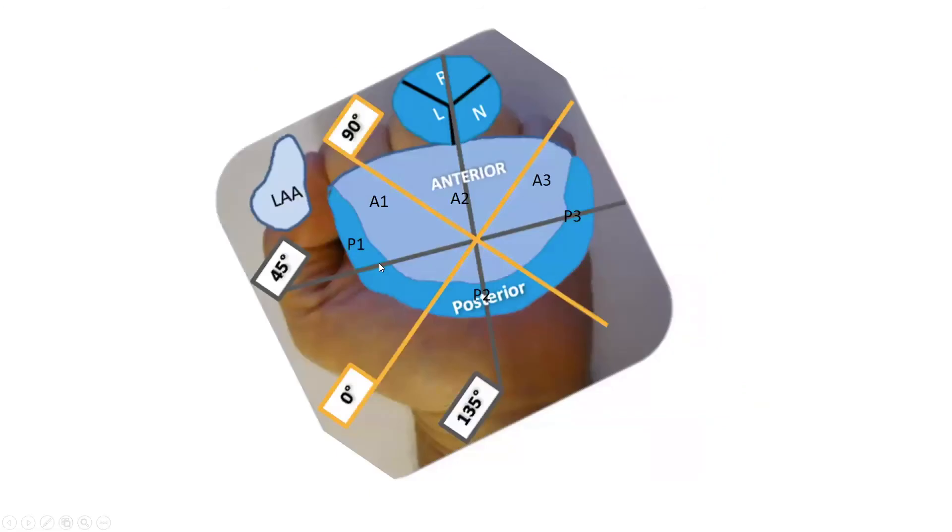So here is our intercommissural view, and as we said, the angles vary. And an x-plane view would be perpendicular to this and represent the anterior-posterior coaptation, which would be A2-P2.